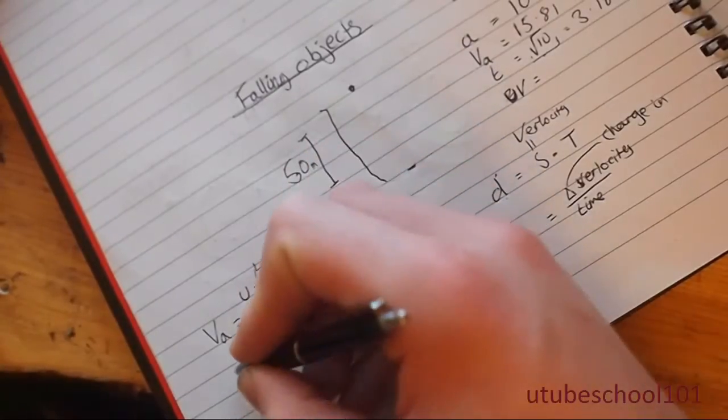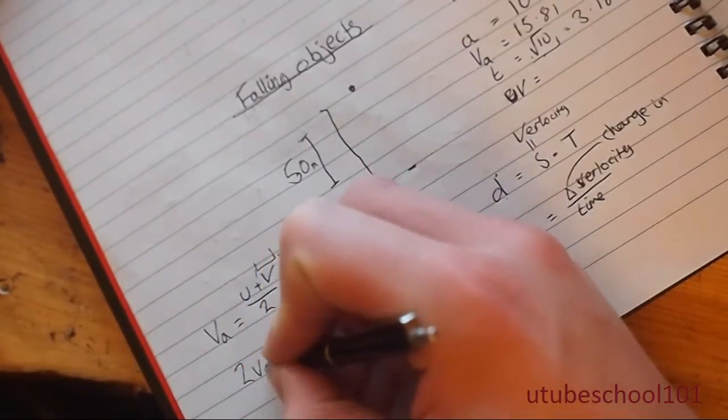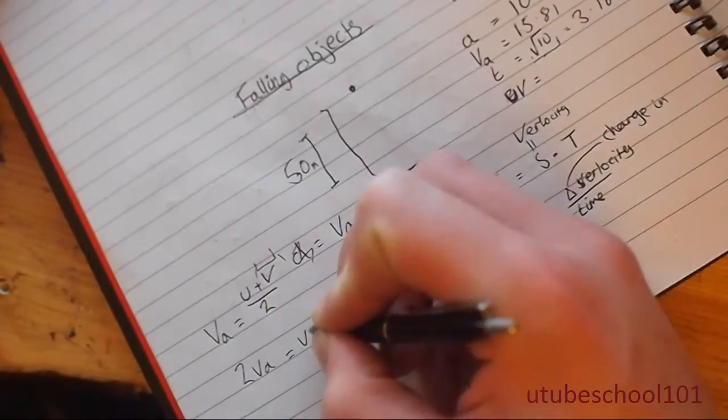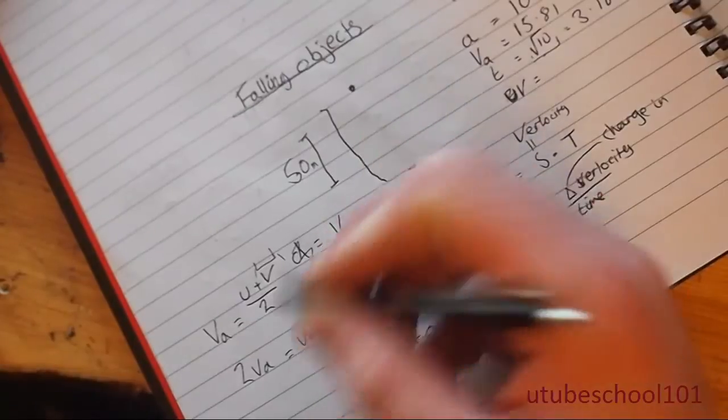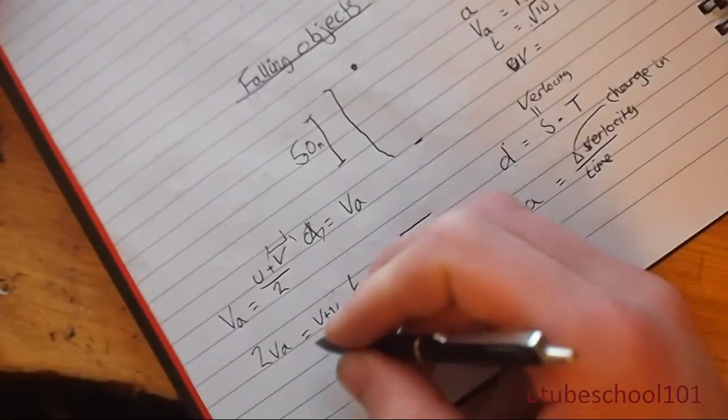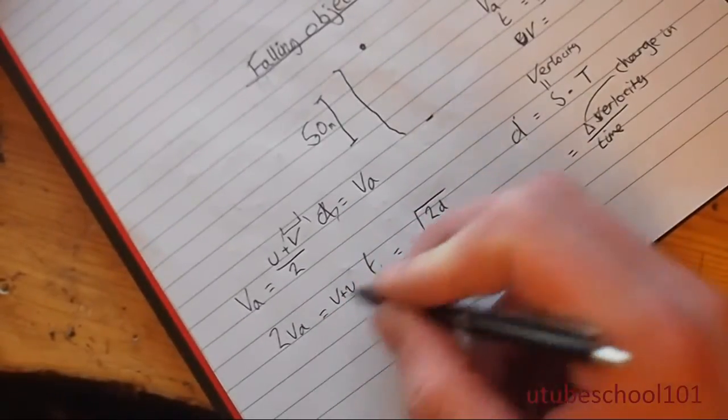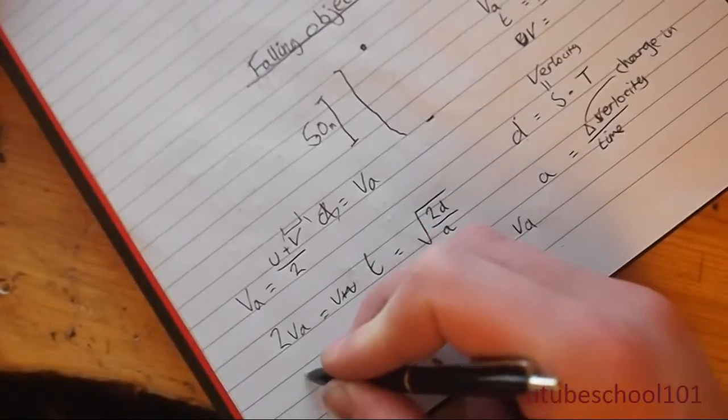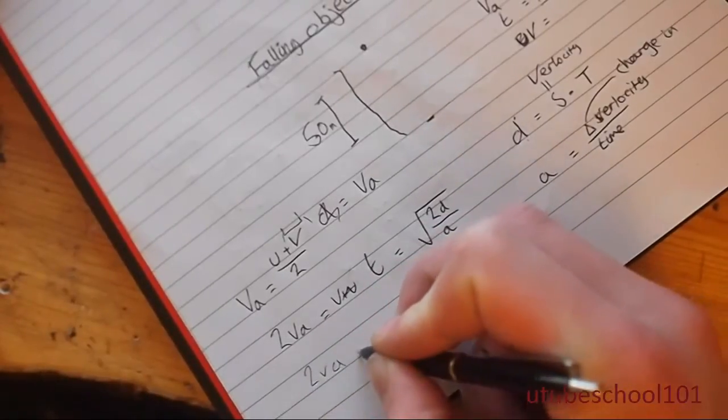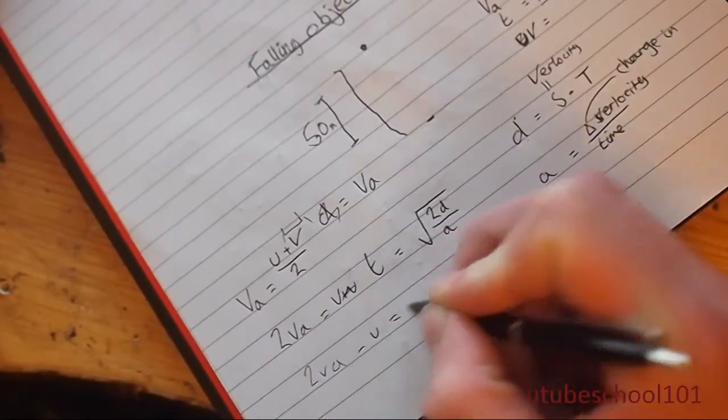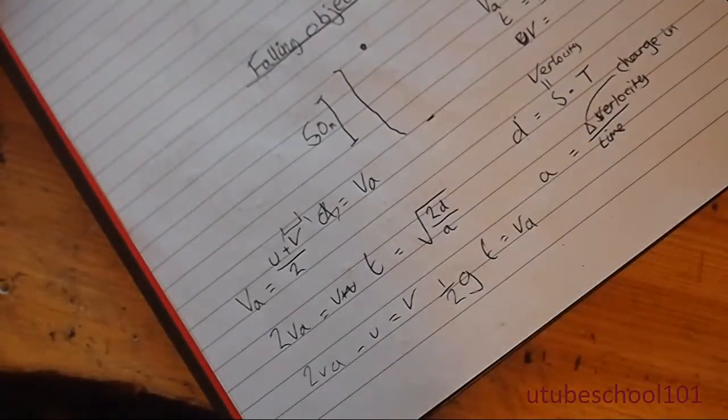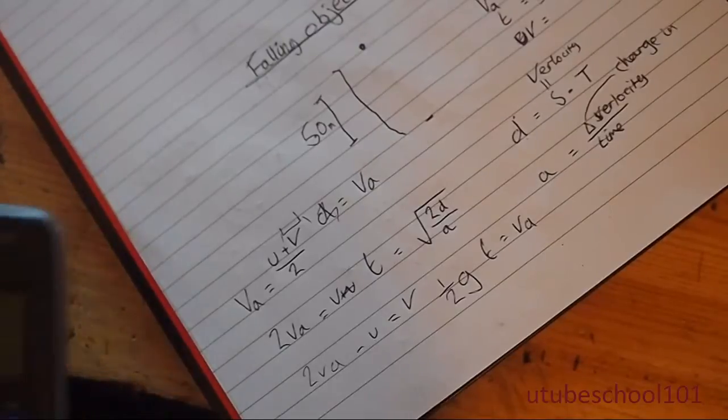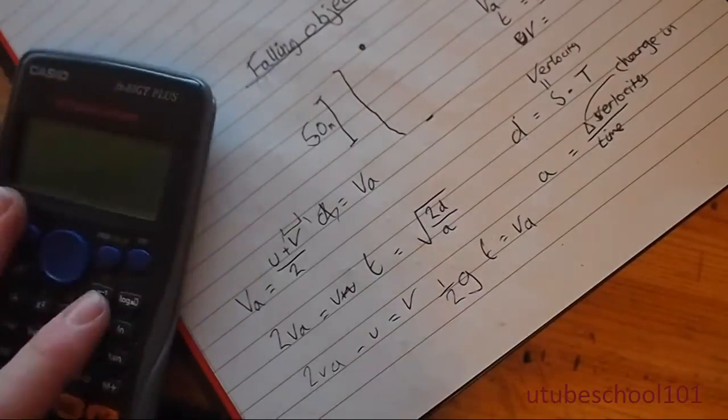First of all, I'll get rid of this 2 by multiplying each side by 2. The u's and the v's get mixed around. So if I just take away u, then I'll get v. So 2 times vA take away u equals v. If you're unsure about this algebra I'm doing, check out my maths videos and I've got some algebra tutorials on there for you.